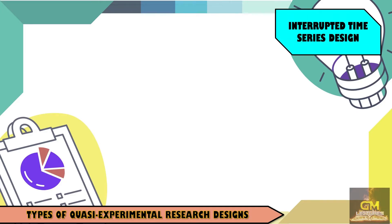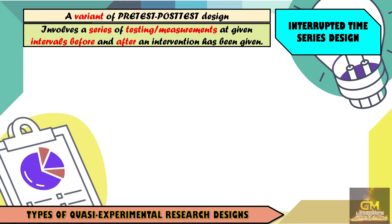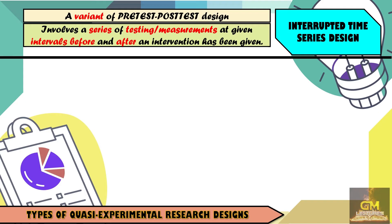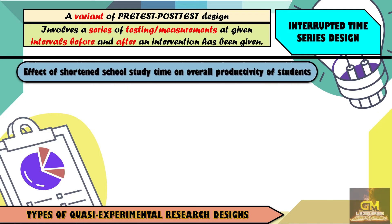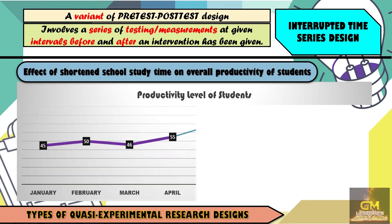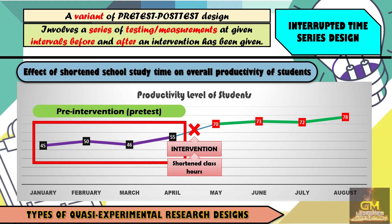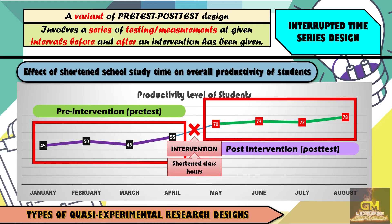Now we focus on the interrupted time series design, which is a variant of the pre-test post-test design. The interrupted time series design involves a series of testing and measurements at given intervals before and after an intervention has been given. Let's consider this example wherein we have a study that aims to identify the effect of shortened school study time on the overall productivity of the students. A researcher will have multiple observations before the intervention is given — in this case, it is the shortened class hours — and after it has been given. The researcher will then observe the data collected before the intervention, which is considered as the pre-test, and after the intervention, which is considered as the post-test.